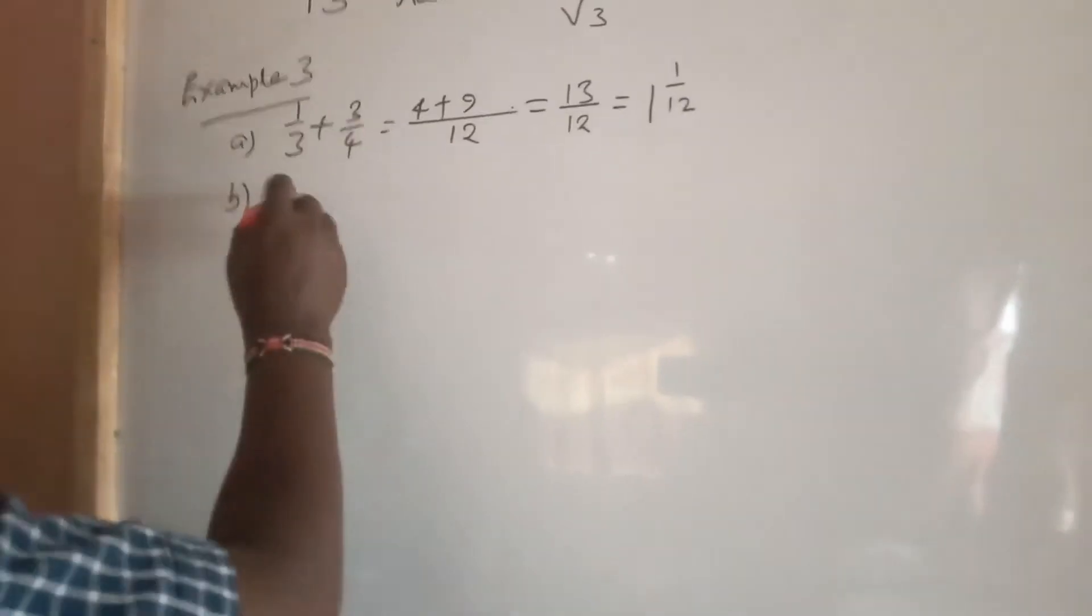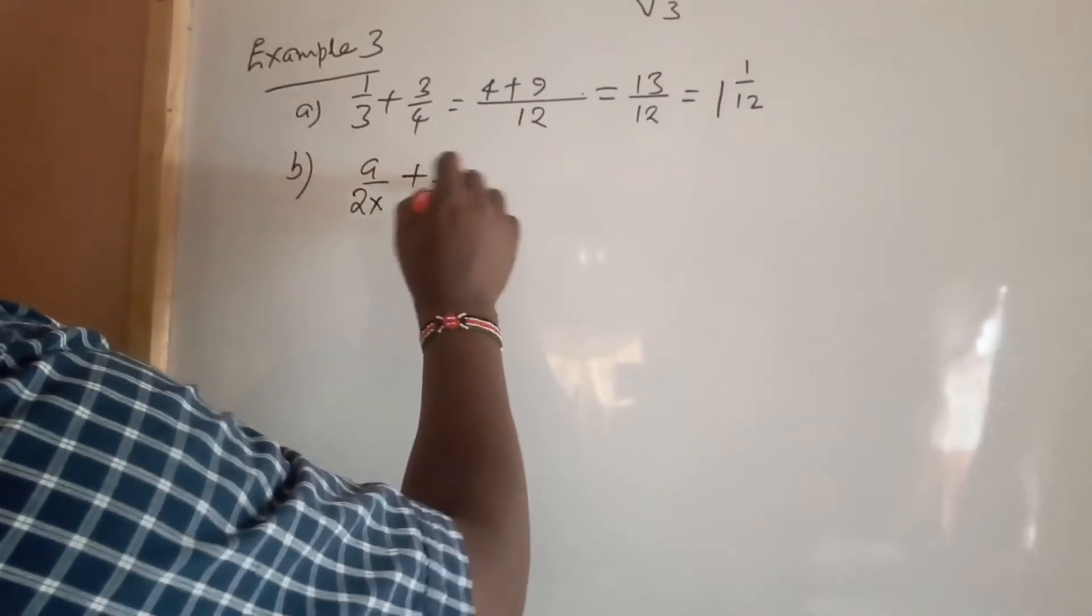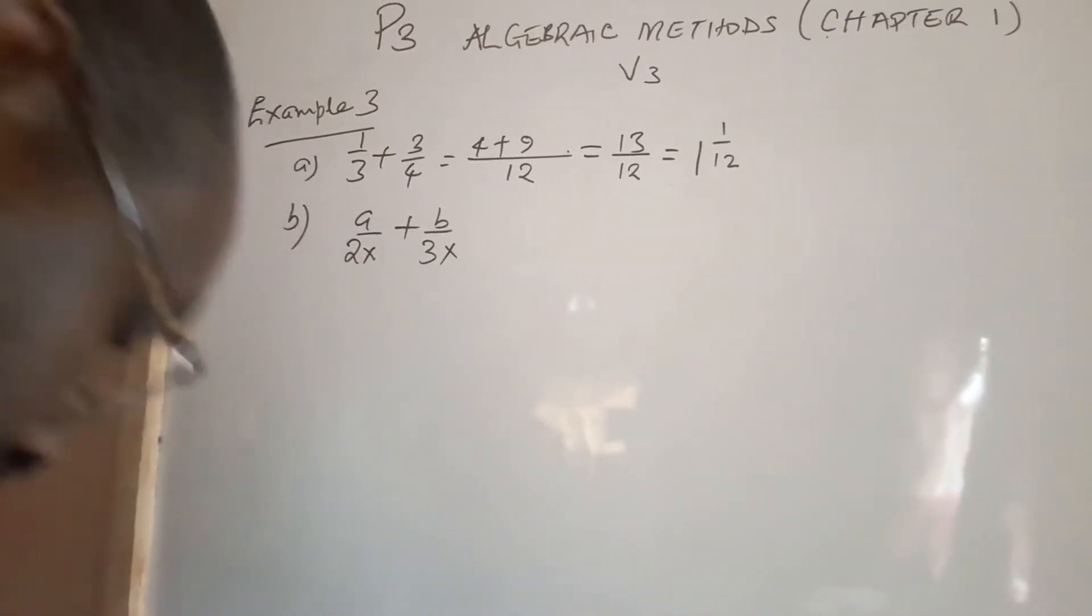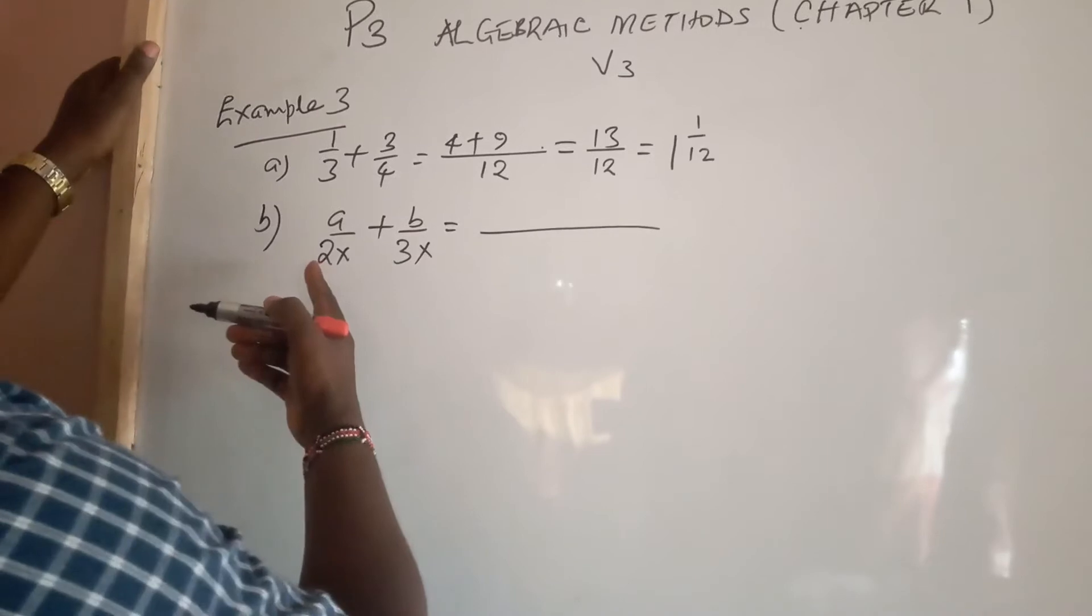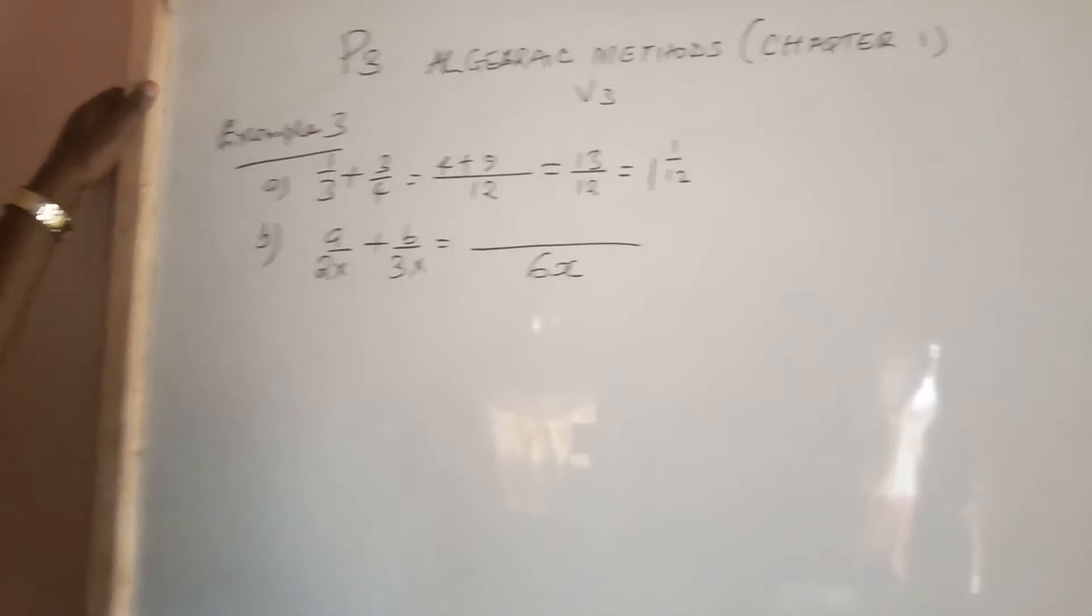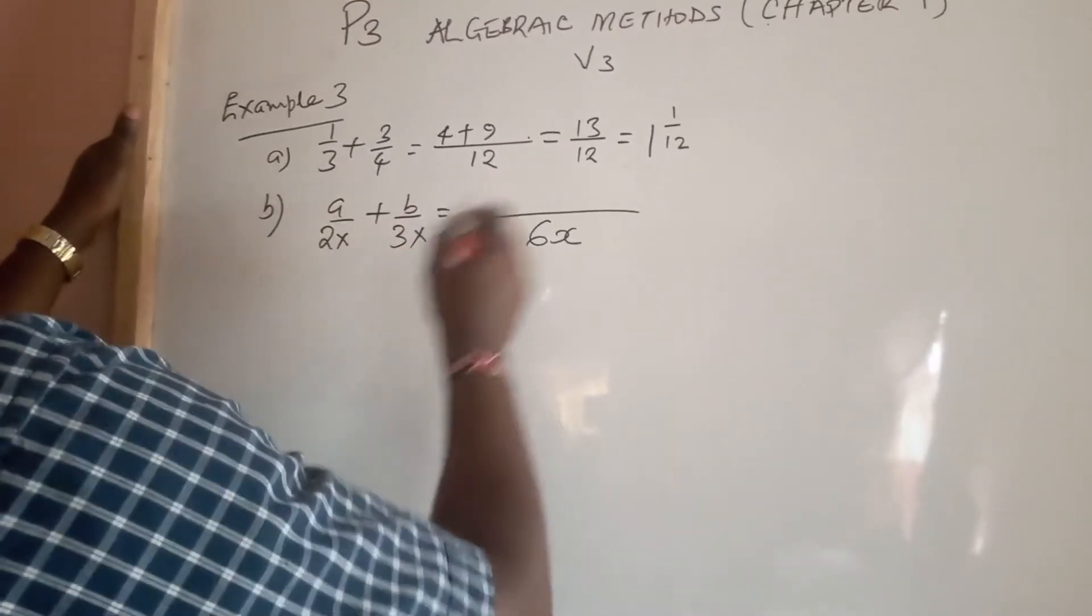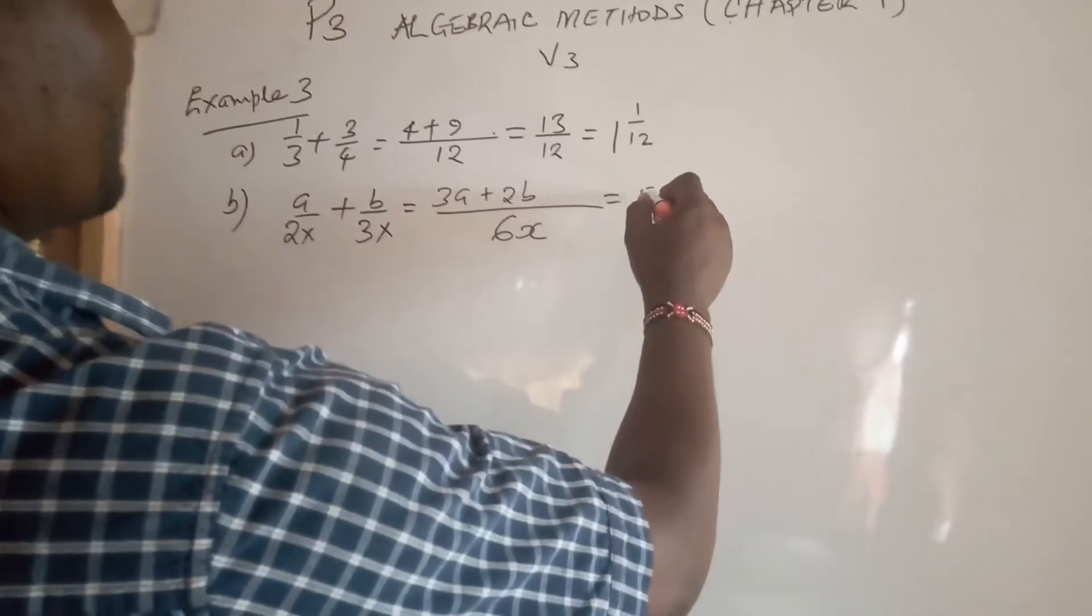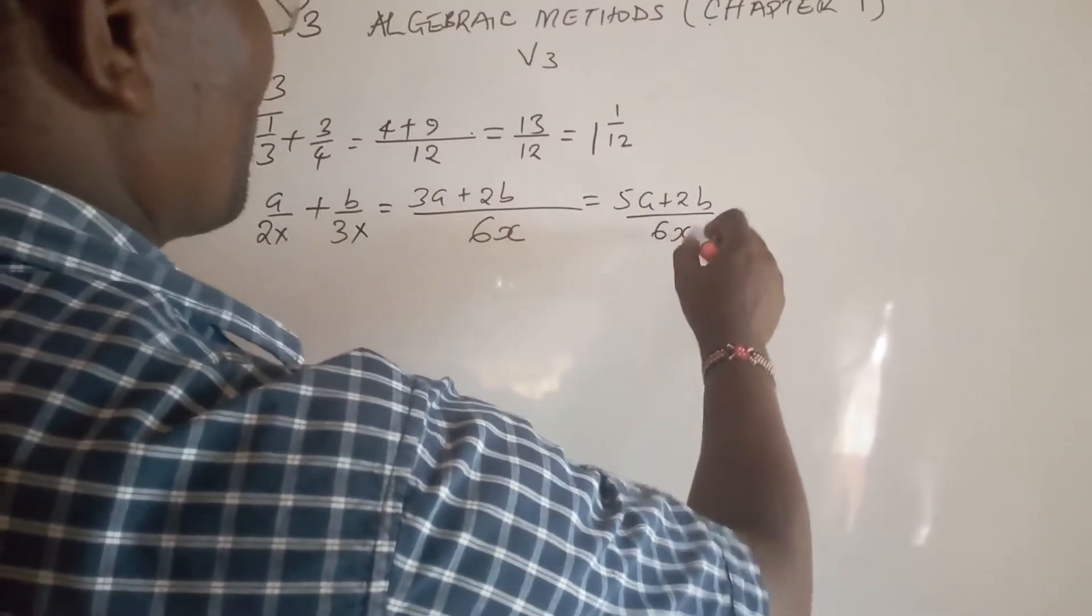Part B says a over 2x plus b over 3x. The LCM of the denominator is simply the LCM of 2 and 3, which is 6, and x remains commonly distributed, so the LCM is 6x. 6x divided by 2x is 3, times a is 3a, plus 2b.